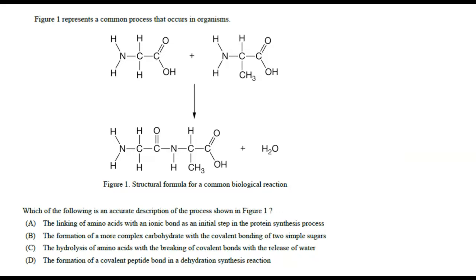Next: Figure 1 represents a common process in organisms — a similar picture to before. Which is an accurate description of the process? Option D says it's the formation of a covalent peptide bond in a dehydration synthesis reaction. You can recognize this is D because you see the removal of a water molecule to combine the two molecules together, which is the definition of dehydration synthesis.